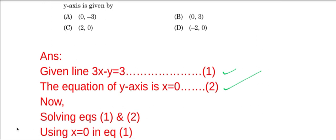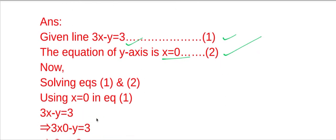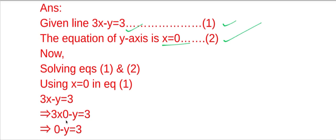So now solving equations 1 and 2. Now using x equal to 0 in equation 1. So equation 1 is 3x minus y equal to 3. That implies 3 into 0 minus y equal to 3.